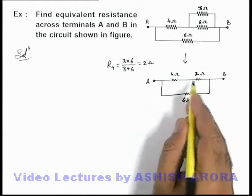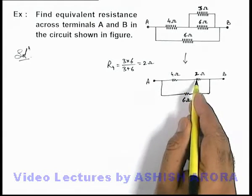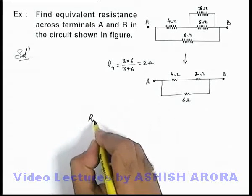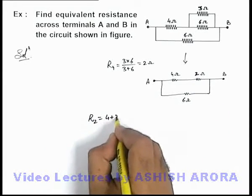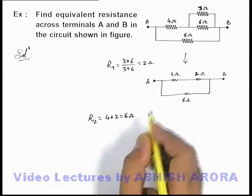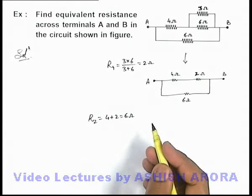Now here you can see that this 4 ohm and 2 ohm can be considered in series combination. So its group combination can be written as 4 plus 2 which is 6 ohms, because in series combination resistances are added up.